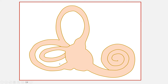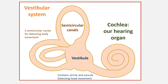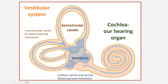The cochlea contains the hearing organ. The vestibular system consists of the vestibule — which contains two endolymphatic structures called the utricle and saccule — and three semicircular canals. The utricle and saccule cannot be seen on CT and are not visible on standard MRI, only on specialized MRI in patients with Ménière's disease. The semicircular canals are three canals angulated at approximately 90 degrees to one another, all connected to the vestibule, important for detecting body movement.